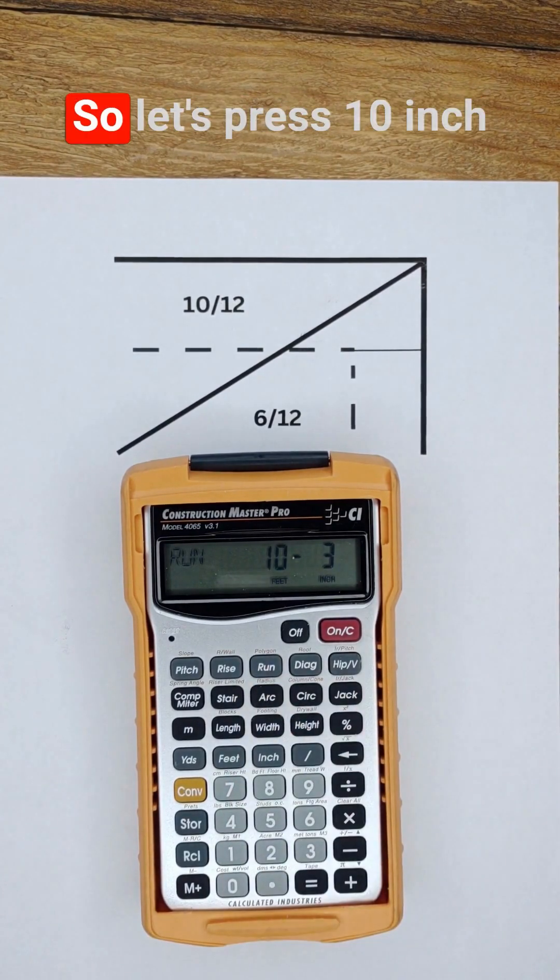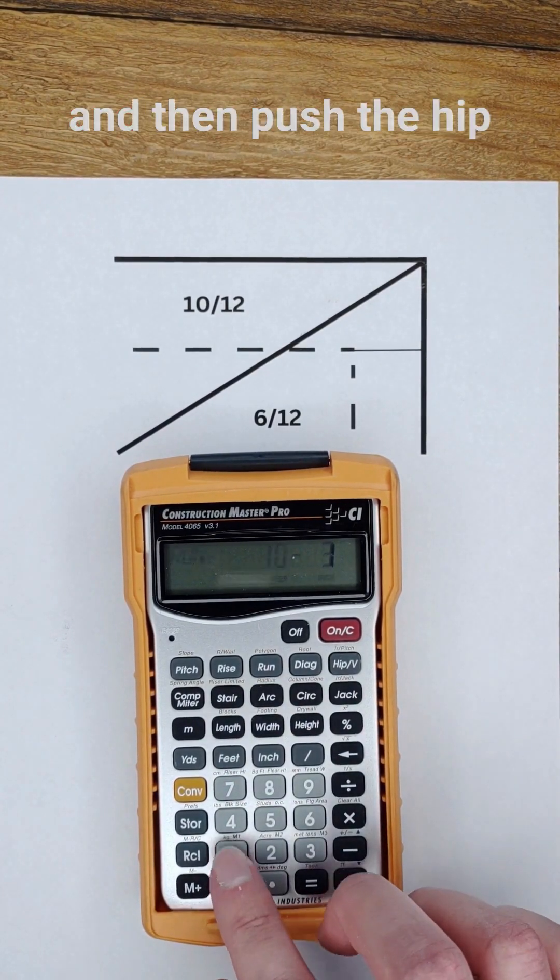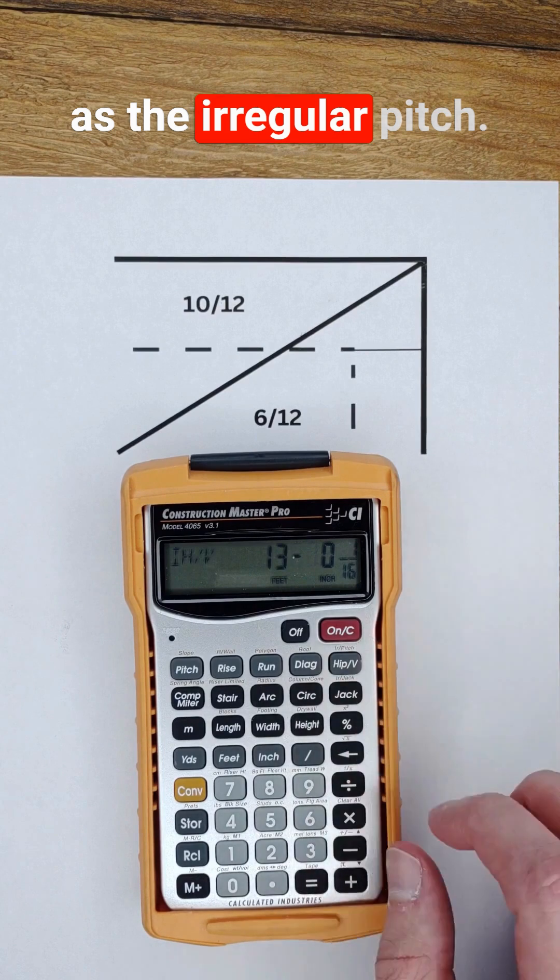And then the other pitch, so let's press 10 inch and then push the hip valley button to set it as the irregular pitch.